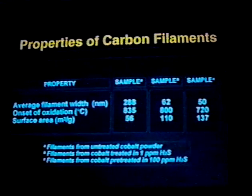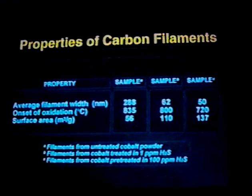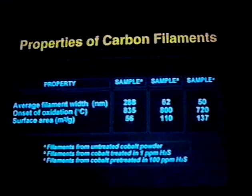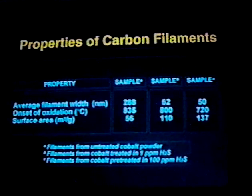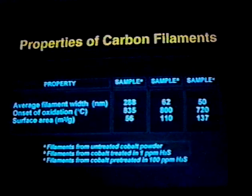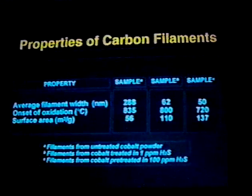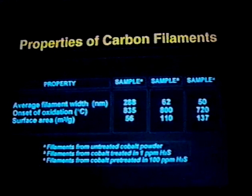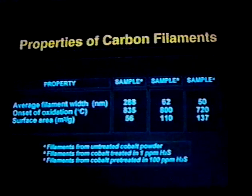As we start to pre-treat the cobalt in various levels of H₂S, things start to change with the carbon deposit. The filaments on average are getting smaller — sulfur is inducing fragmentation. They are also becoming less graphitic in nature. What that tells us is that sulfur is modifying the wetting characteristics of the metal at the back face of the catalyst particle, making it more non-wetting and producing a more non-graphitic filament. Concomitantly, the surface area of these structures is increasing — they are becoming much more disordered.